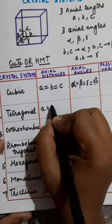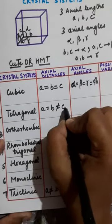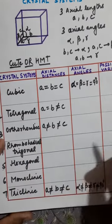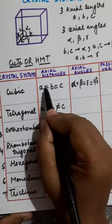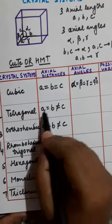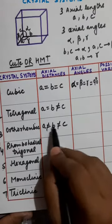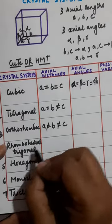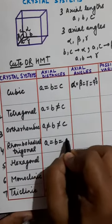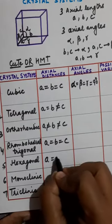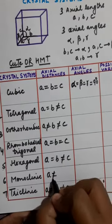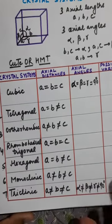After this, you will write the axial distances for the other systems. There are three patterns: A = B = C (three edges equal), A = B ≠ C (one is different), and A ≠ B ≠ C (all three different). For rhombohedral, repeat these same three patterns. This way you can remember them easily.